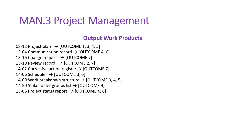The output work products are: project plan or the project specification document, communication records such as email or configuration management tool auto-generated records, change request, review record, corrective action register, project schedule, work breakdown structure or WBS, stakeholder group list, resource log or resource list with the competency matrix, and project status reports. Project status reports are given to top management and the client as agreed in the beginning of the project.